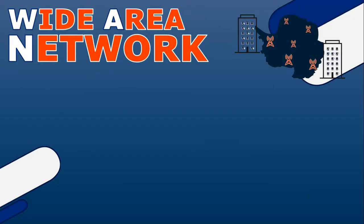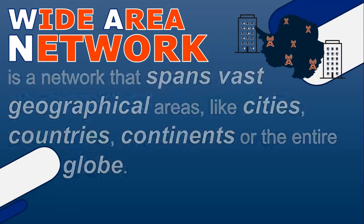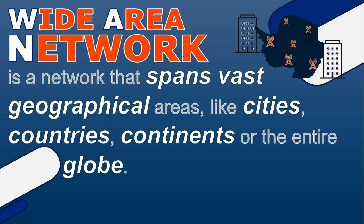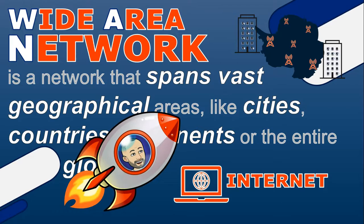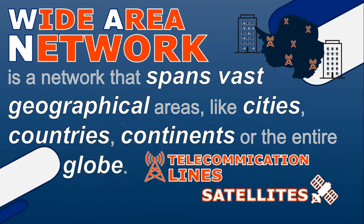We call these a Wide Area Network, or WAN — the big daddy of networks. It spans vast geographical areas like cities, countries, continents, or even the entire globe. WANs connect LANs, MANs, and other networks across different locations, allowing for long-distance communication on a global scale. The largest one currently is the internet, and that record will stand until we start needing to connect networks on the moon or Mars. WANs often rely on telecommunication company lines, satellites, and the internet to establish connections between distant networks.